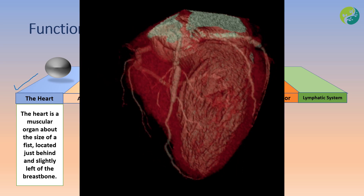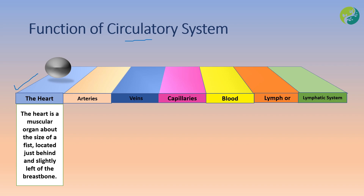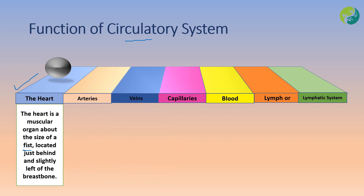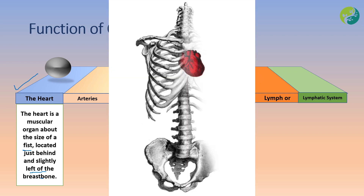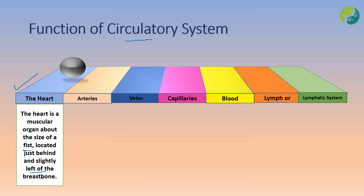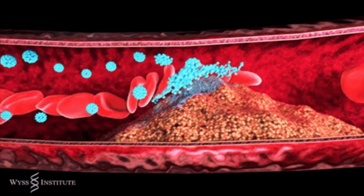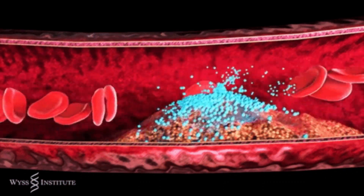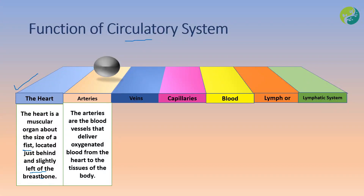The heart is a muscular organ about the size of a clenched fist, located just behind and slightly left of the breastbone. Arteries are blood vessels, or tubes, that carry fluid. Arteries deliver oxygenated blood from the heart to the tissues of the body.